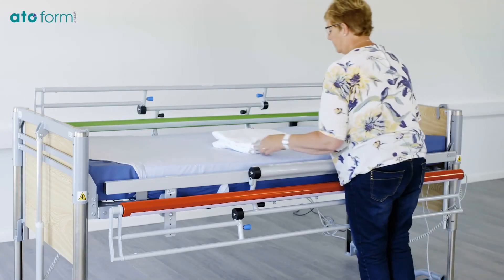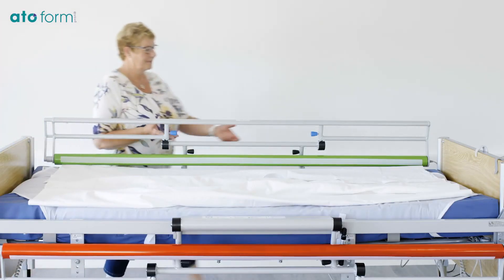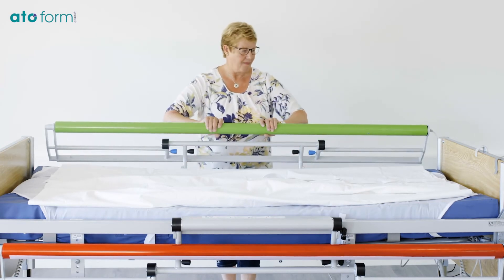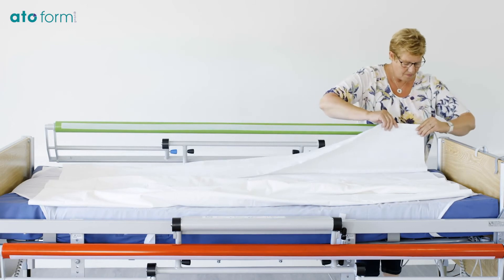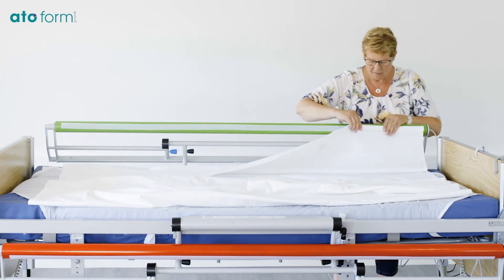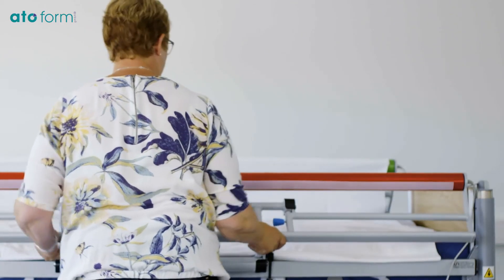Layer the sheet on the bed with the Velcro side facing down. Turn the bed rails so the motor roll is at the top. Start at the head end of the bed and attach the sheet to the motor roll in one long smooth motion on both sides.